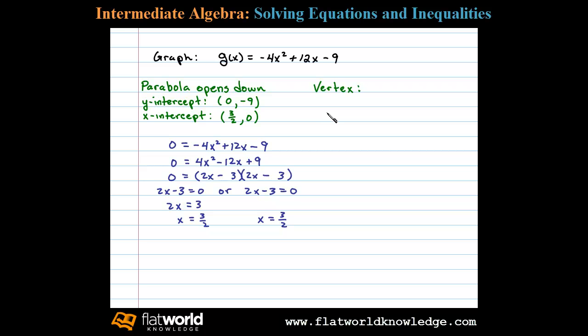We can find the x value of the vertex using the formula x equals -b over 2a. Now when you use this formula, remember you want to use your original function here. So we have -b, or -12, over 2 times a, 2 times -4, which is -12 over -8, reduces to 3/2.